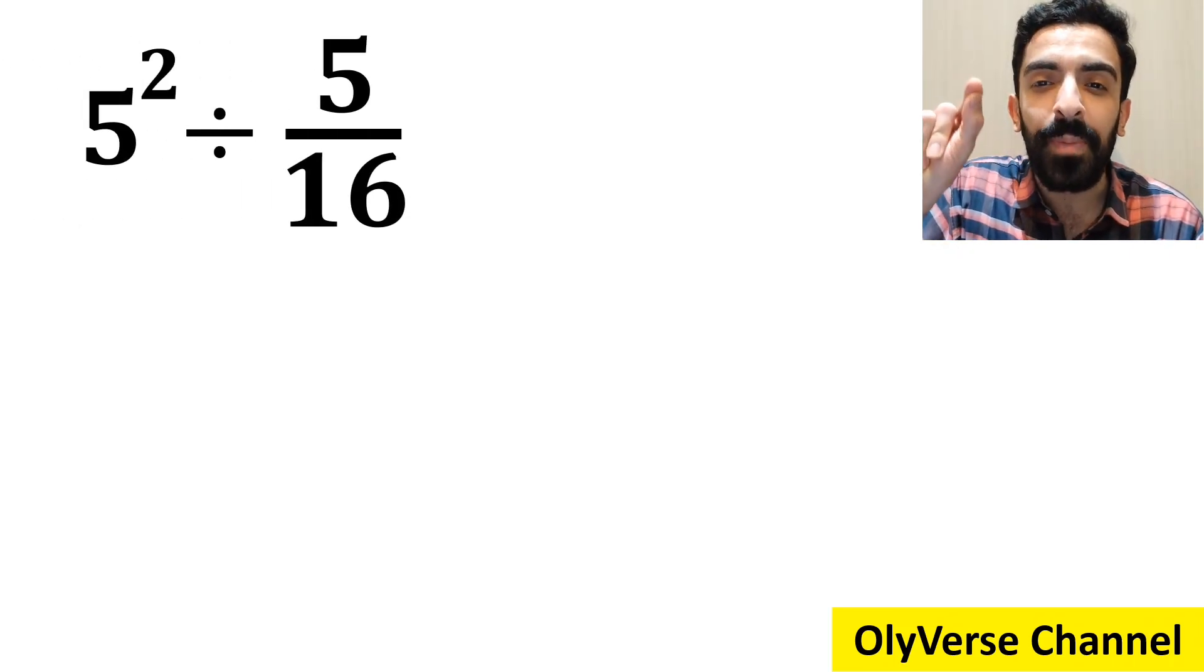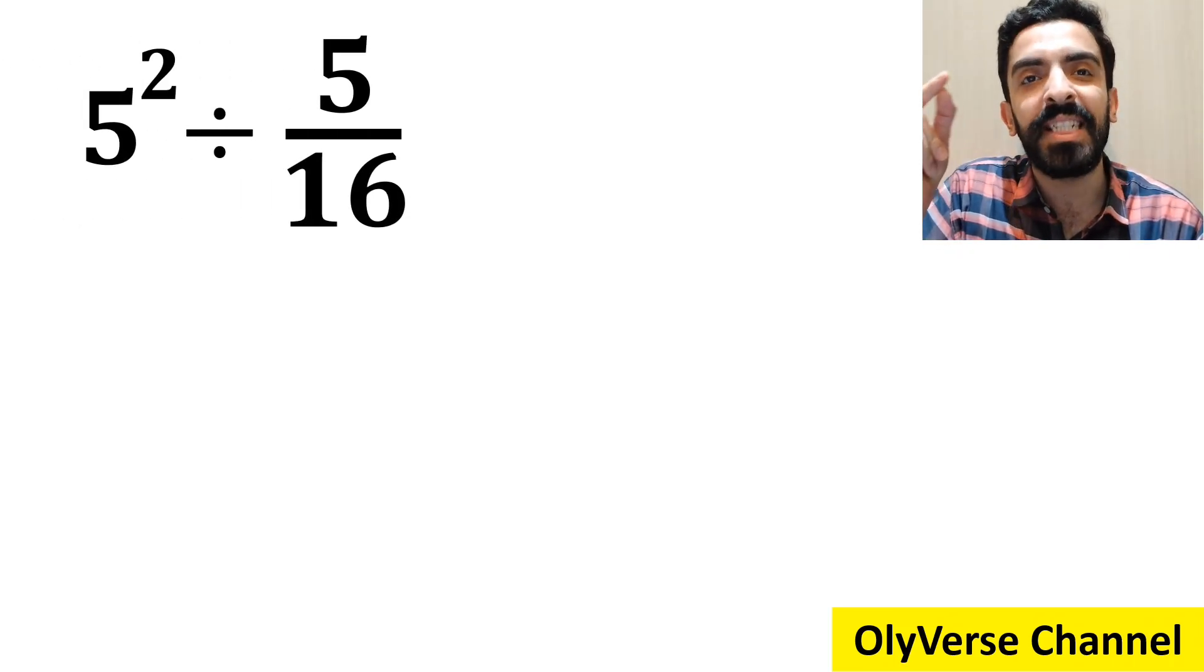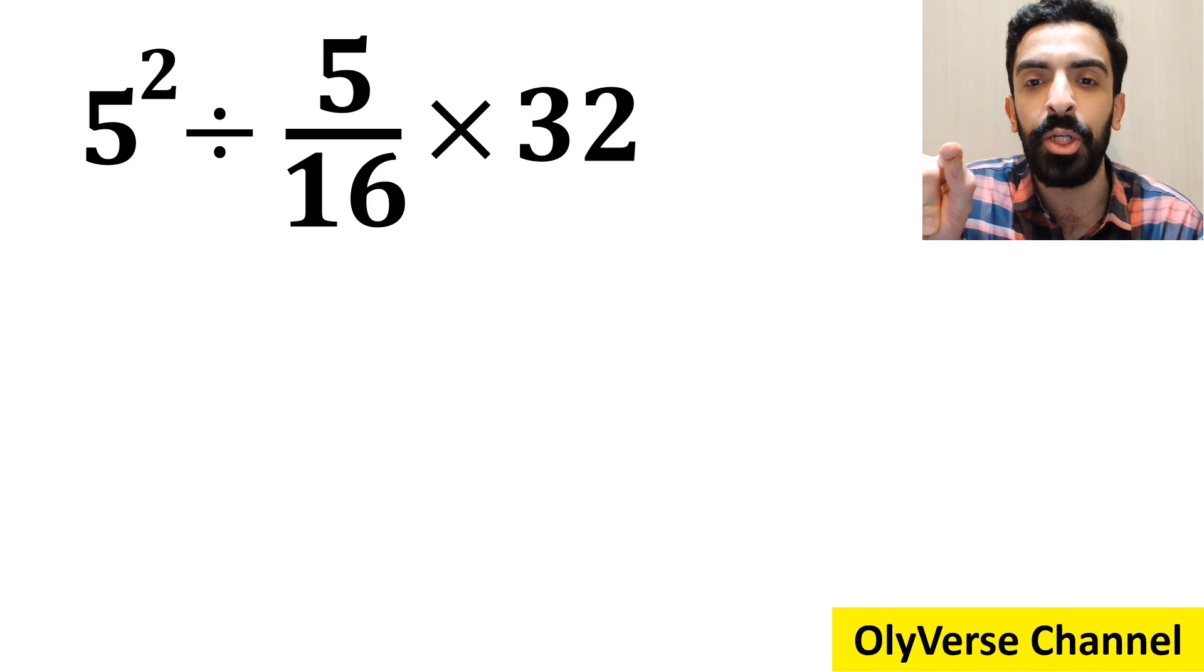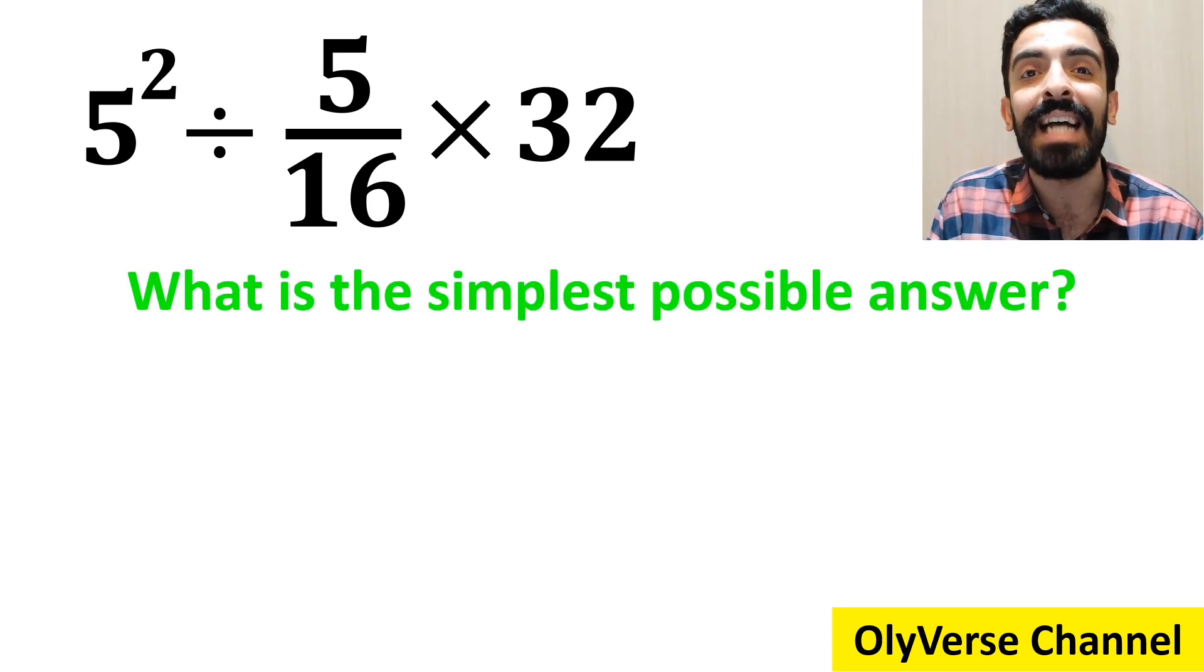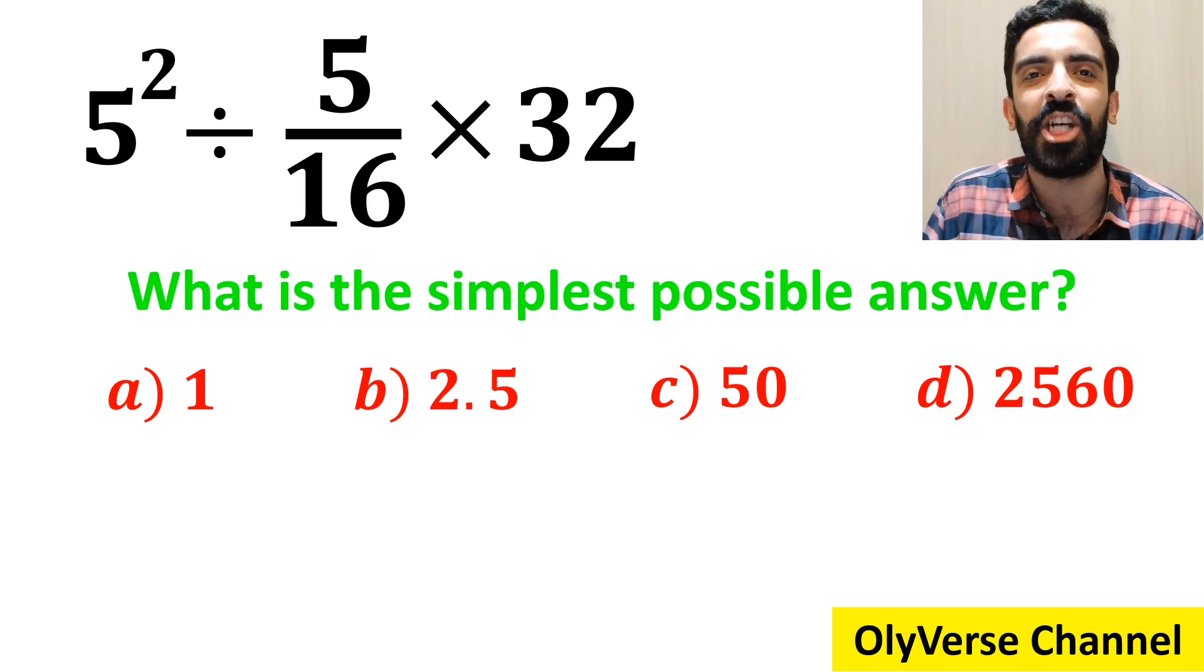If we have the expression 5 to the power of 2 divided by 5 over 16 multiplied by 32, then what is the simplest possible answer for this expression? Which option do you think is the correct answer to this question?